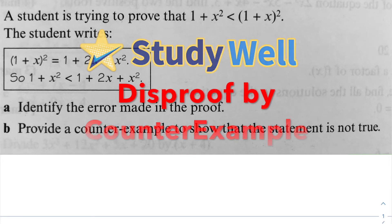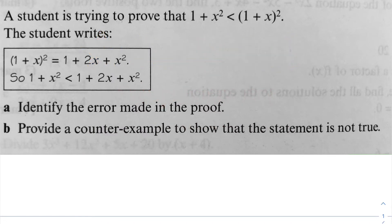This is a disproof by counter-example question taken from an Edexcel textbook. Two parts to the question. A student is trying to prove that 1 plus x squared is less than 1 plus x all squared.